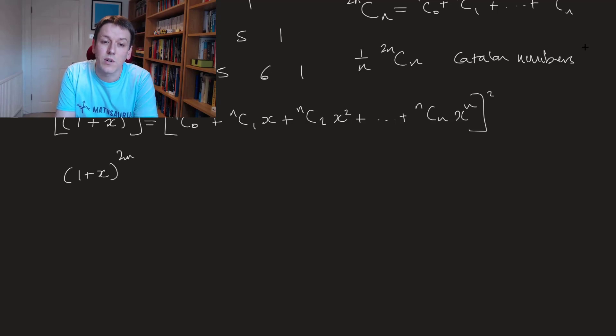But this 1 plus x to the 2n now relates to the 2nth row of Pascal's triangle and the entry we're looking for is the middle one, the nth one. So actually the number 2n choose n is going to be the coefficient of x to the n in this expansion.